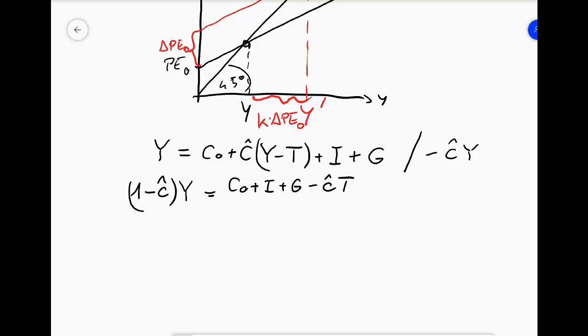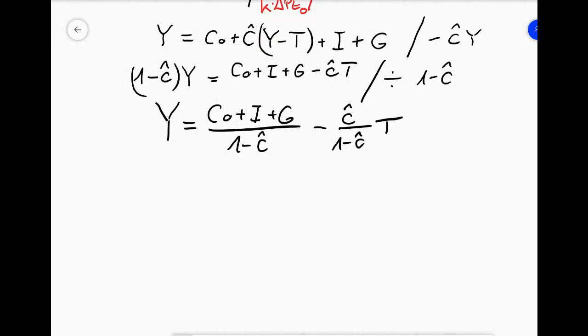Now we want to divide both sides by 1 minus C hat and we will get that Y equals C0 plus I plus G over 1 minus C hat minus C hat over 1 minus C hat times T. So what we find if we simply increase one of the planned expenditure categories, for example I or G or the autonomous part of consumption, then the increase in Y will be 1 over 1 minus C hat fold. So this is our K. In other words, this is our fiscal multiplier.